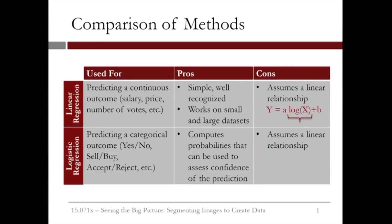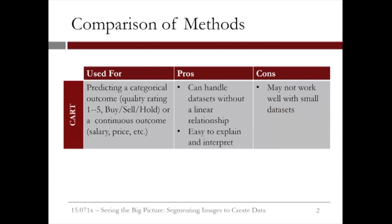The downside is again similar to that of linear regression. In the Trees Week, we learned CART, which is used to predict a categorical outcome with possibly more than two categories, like a quality rating from one to five or three decisions such as buy, sell, or hold. It can also predict a continuous outcome, such as salary or price. We have seen it applied to predict life expectancy, earnings from census data, and letter recognition.